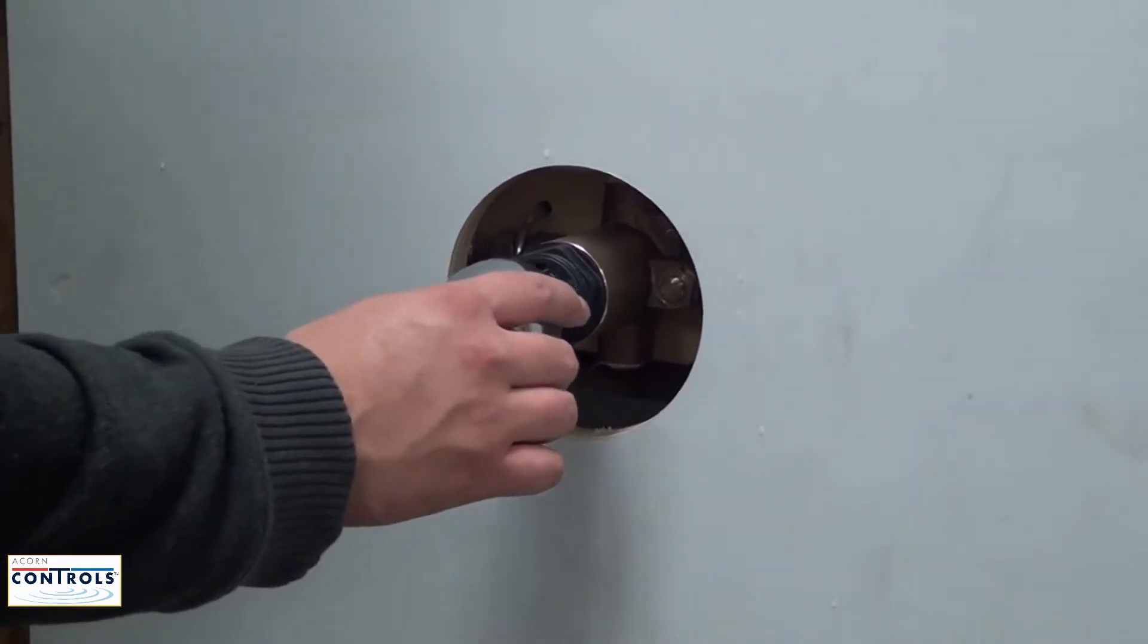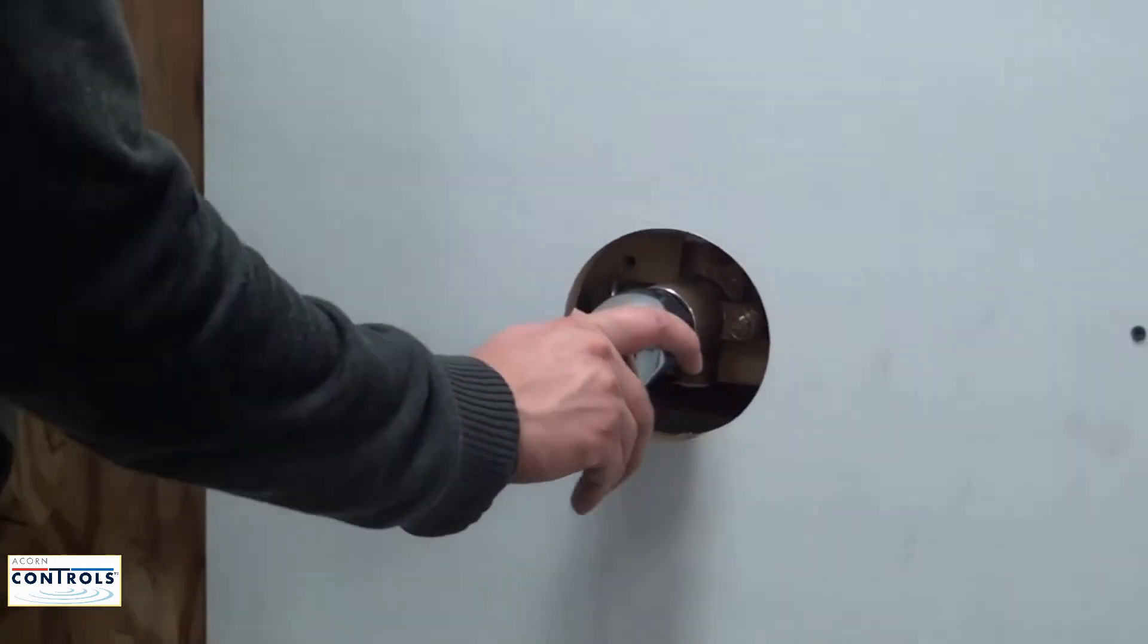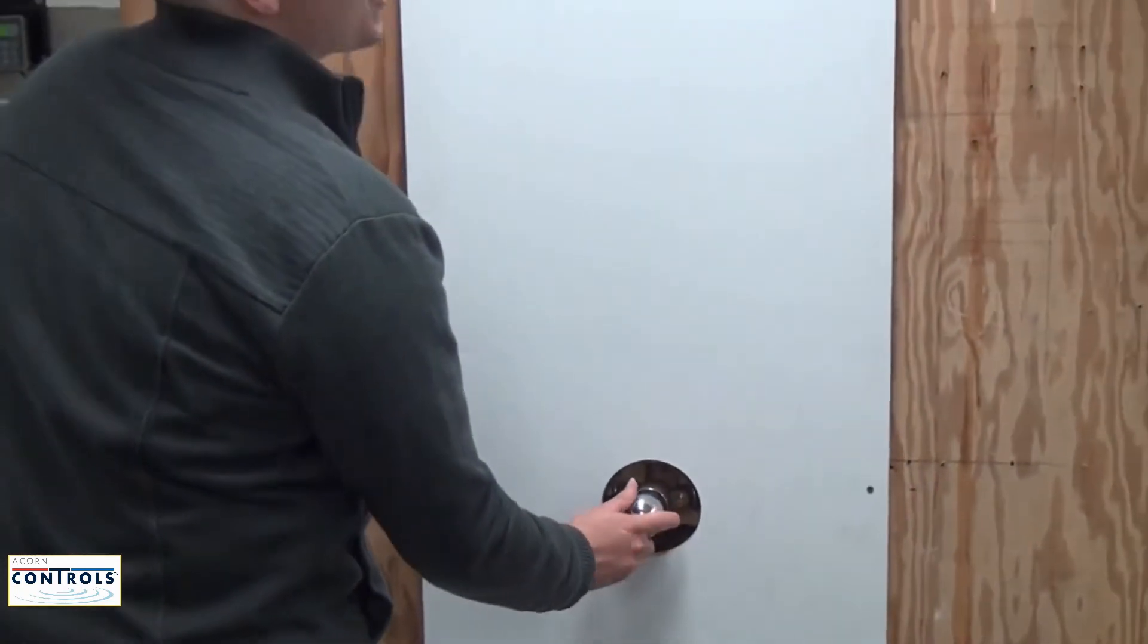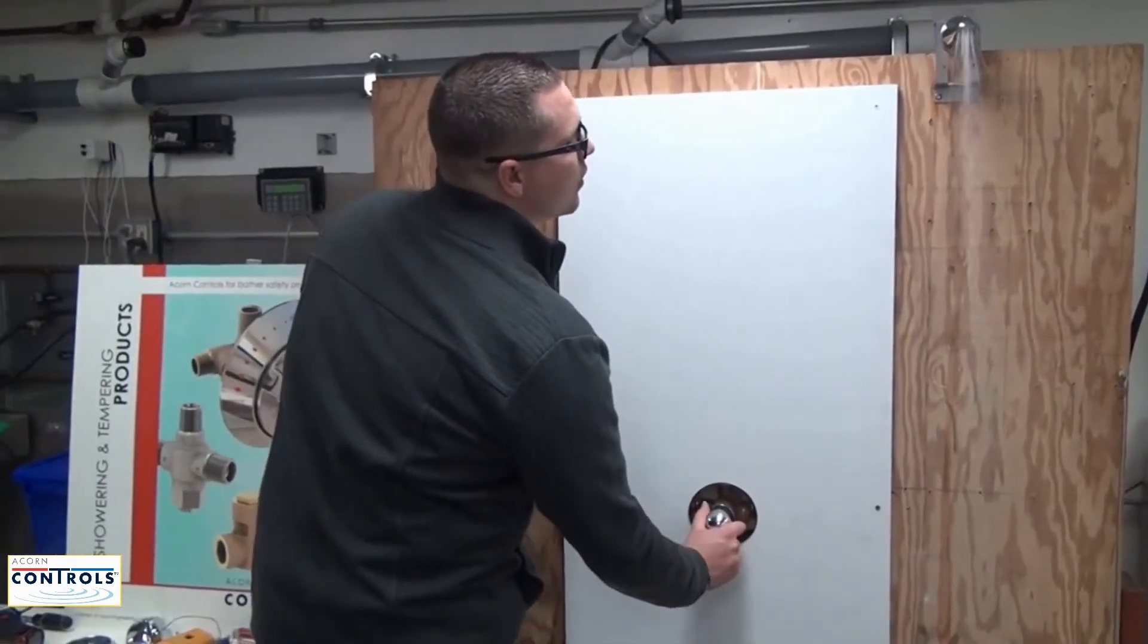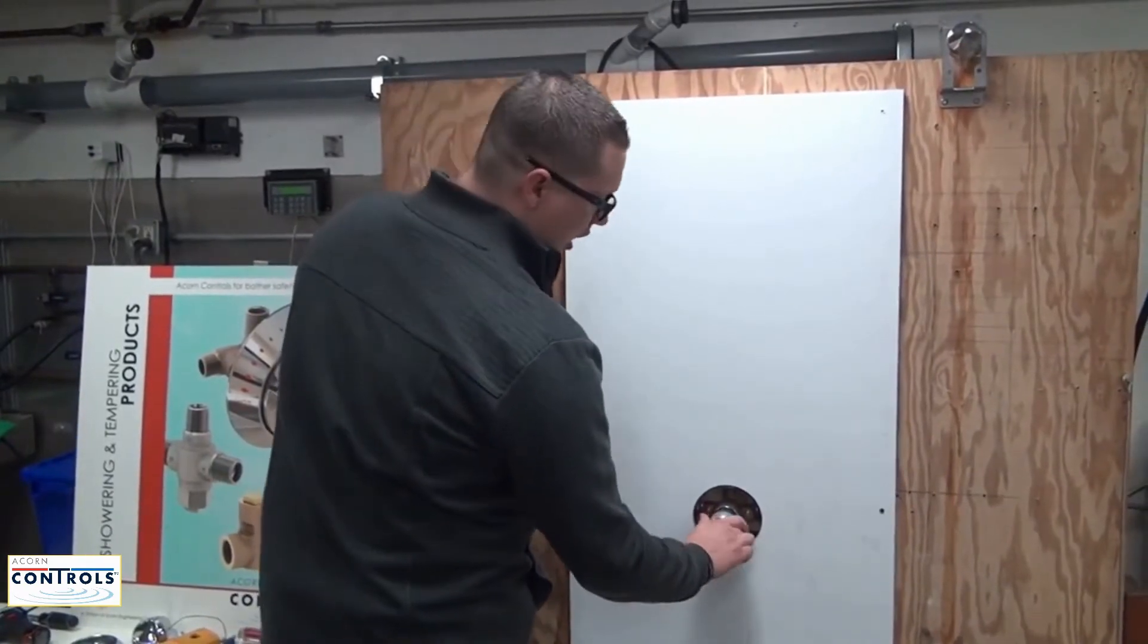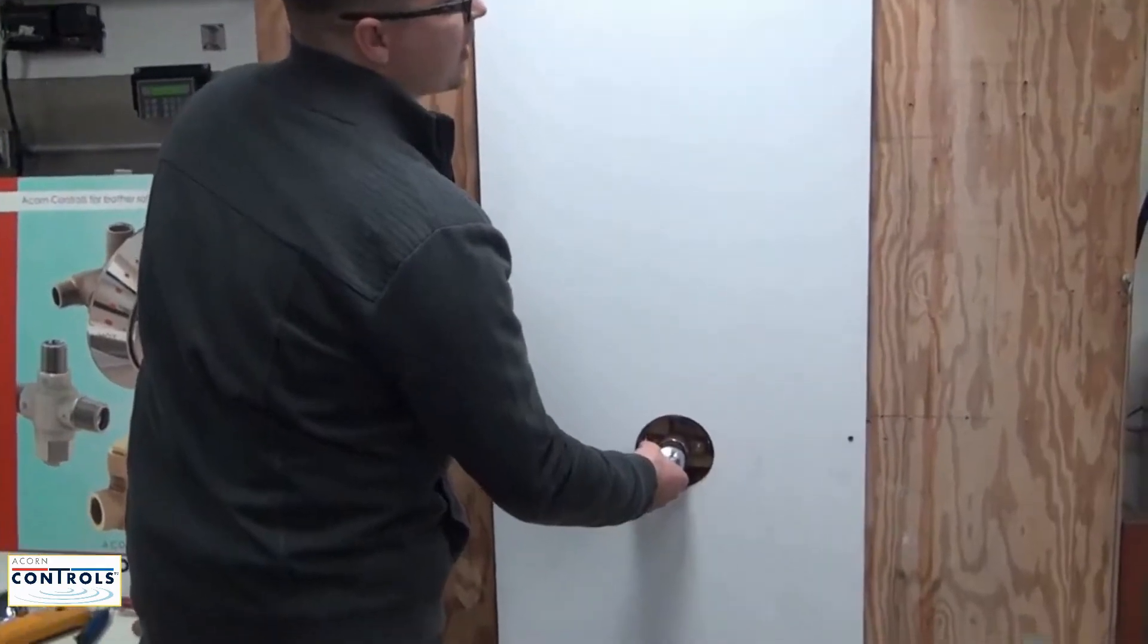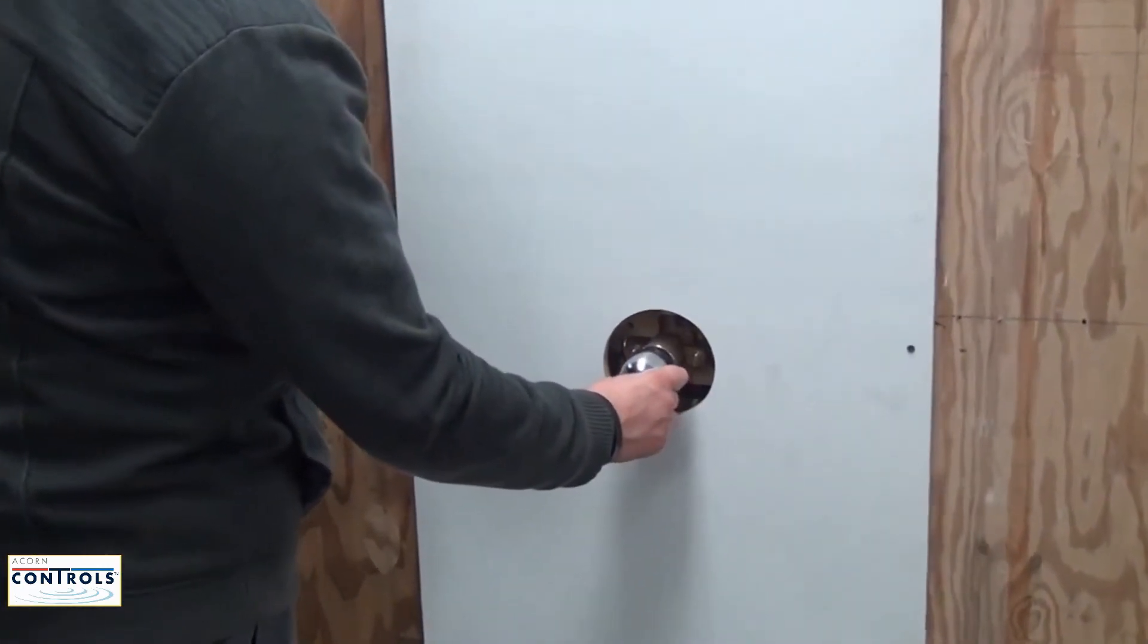To set the off stop, we are going to slide the handle over the stem and rotate the stem two complete turns until the water shuts off. Once you've rotated it twice and the water is shut off, go clockwise 90 degrees and come back until the water shuts off.